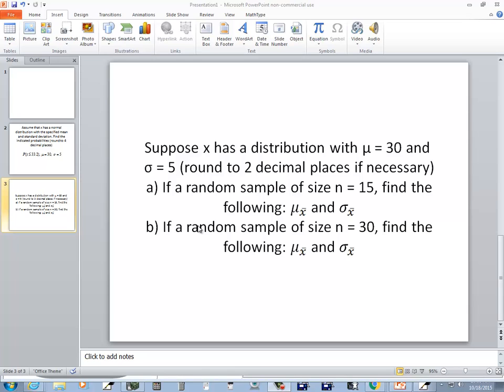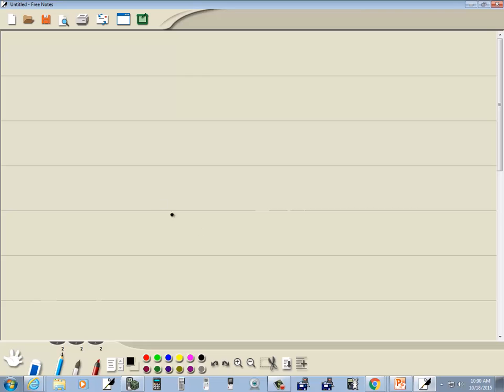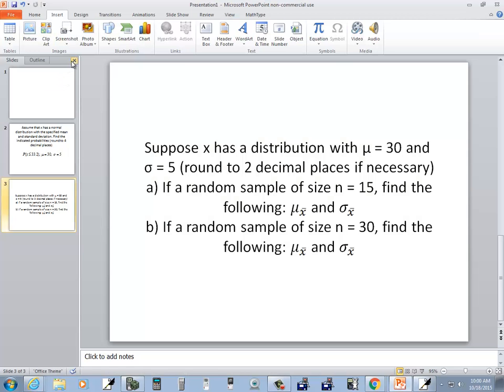Let's take a look at this problem. Suppose x has a distribution with mu equals 30 and sigma equal to 5. We'll round to two decimal places if necessary, and we're going to use the central limit theorem on this. We'll assume all the requirements are met for that.